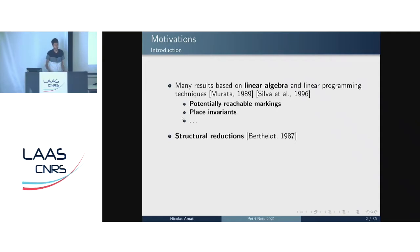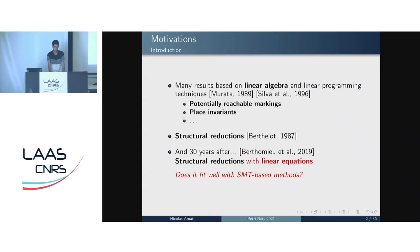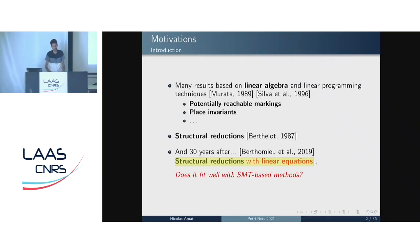Another optimization technique is the use of structural reductions, introduced by Bertolo in 1987. The goal is to reduce the Petri net that we want to verify by preserving some properties. But 30 years later, the VERYCO team developed new structural reductions with linear equations. The aim of these linear equations was to preserve enough information about the reachable markings of the initial net in order to rebuild its state space from the reduced net.